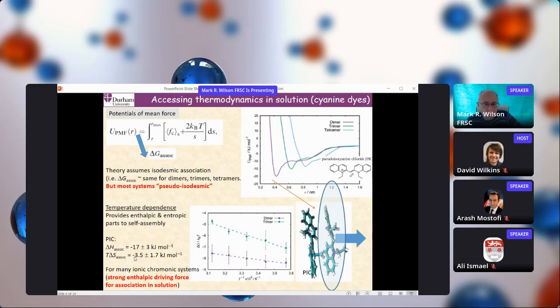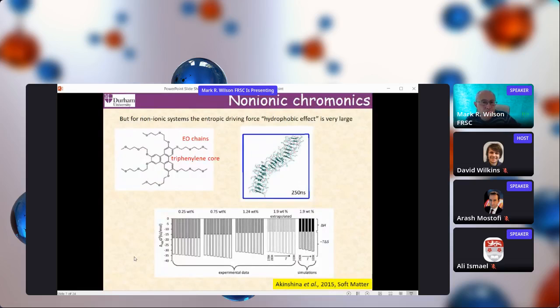This is not true for all chromonic systems. I'll show you one more example of that. This is actually a non-ionic chromonic system, a bit akin to a non-ionic amphiphile that you might get in detergent systems. We're using ethylene oxide chains to represent the hydrophilic parts of this molecule around a triphenylene core. For these systems, we tend to find that the hydrophobic effect in solution is extremely strong. If you work out the enthalpic and entropic contributions to association, it's actually the entropic effect which is dominant for these. These form quite strong aggregates and quite long aggregates, but fairly flexible long chains in solution.